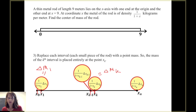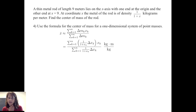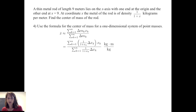The mass of the k-th interval is placed entirely at the point x sub k, giving a system of n point masses. Using the formula for center of mass of a one-dimensional system, x bar is approximated by the sum from k equals 1 to n of delta m sub k times x sub k, divided by the sum of the masses. Substituting delta m sub k gives the sum of 1 over 1 plus x sub k times x sub k times delta x sub k in the numerator, divided by the sum of 1 over 1 plus x sub k times delta x sub k. Units in the numerator are kilogram-meters divided by kilograms, giving meters.